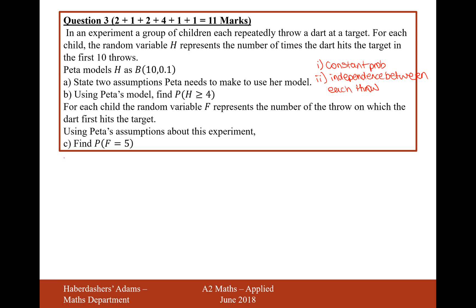Okay, moving on to part B then. Using Peter's model, find the probability of H is greater than or equal to 4. So what that's effectively saying is that 4 darts will hit the board or more. So what we'll do then is we'll write down our binomial distribution using H. So it's going to be binomial 10, 0.1.